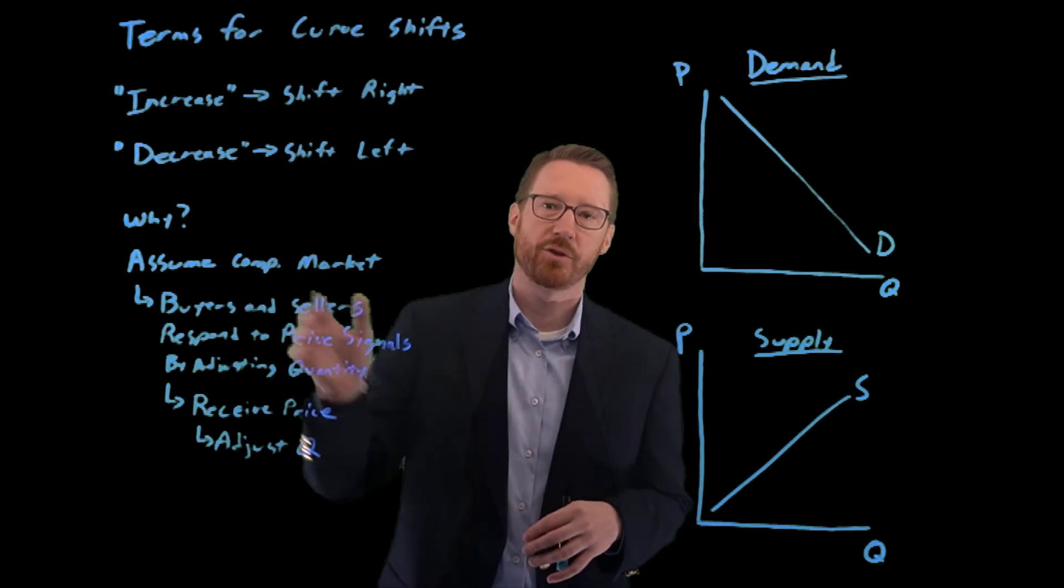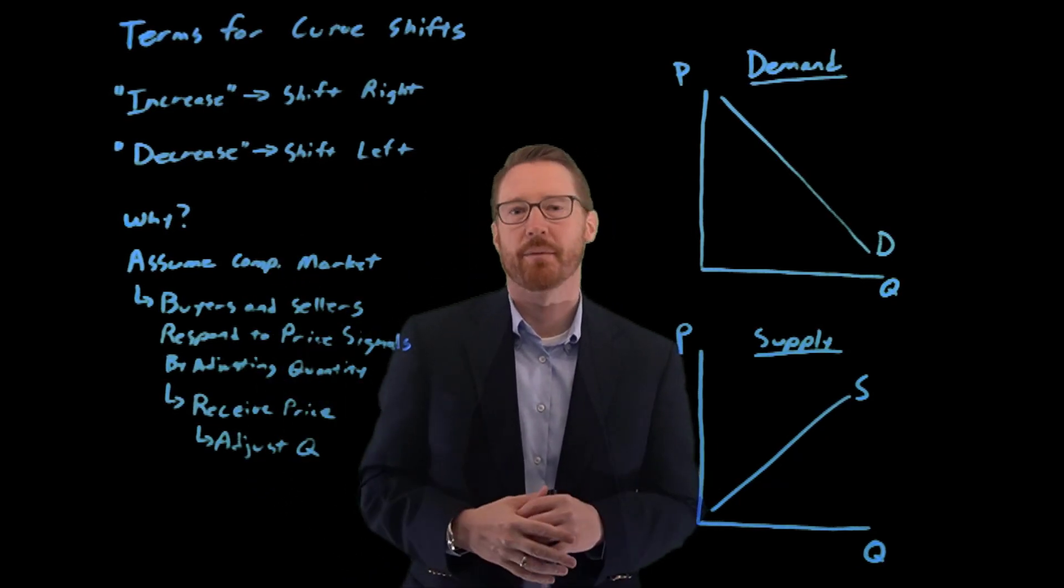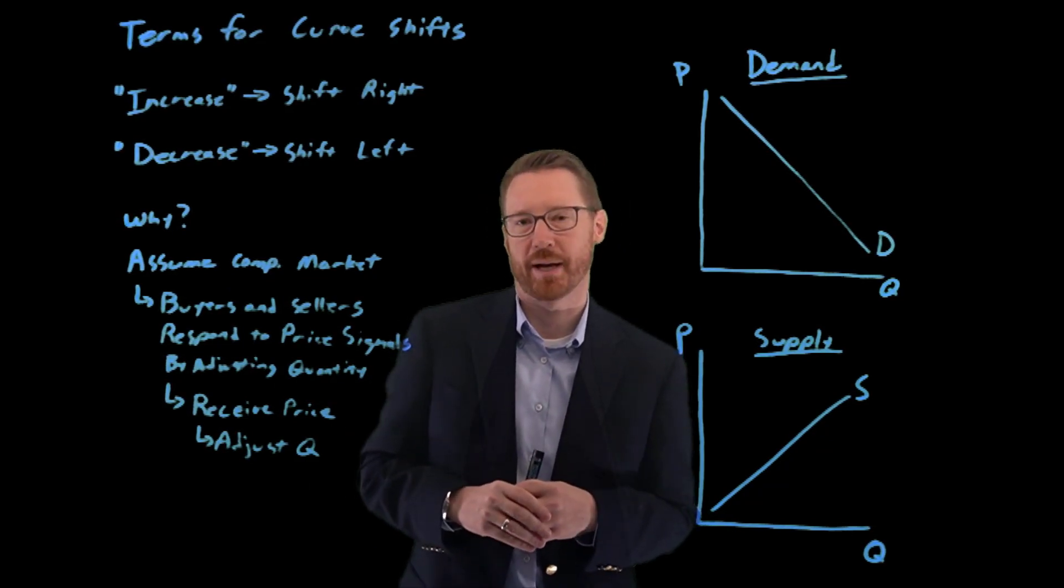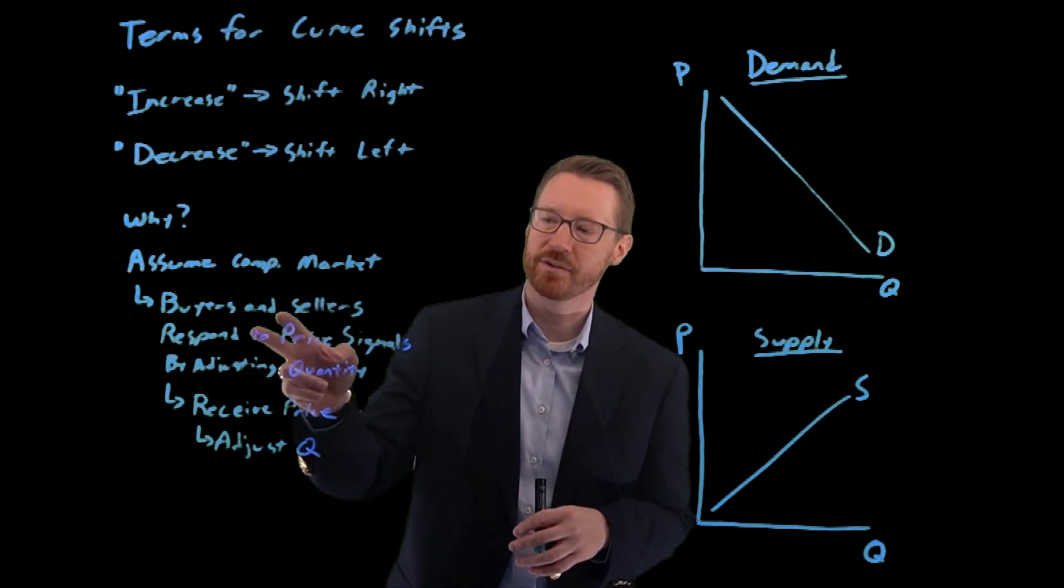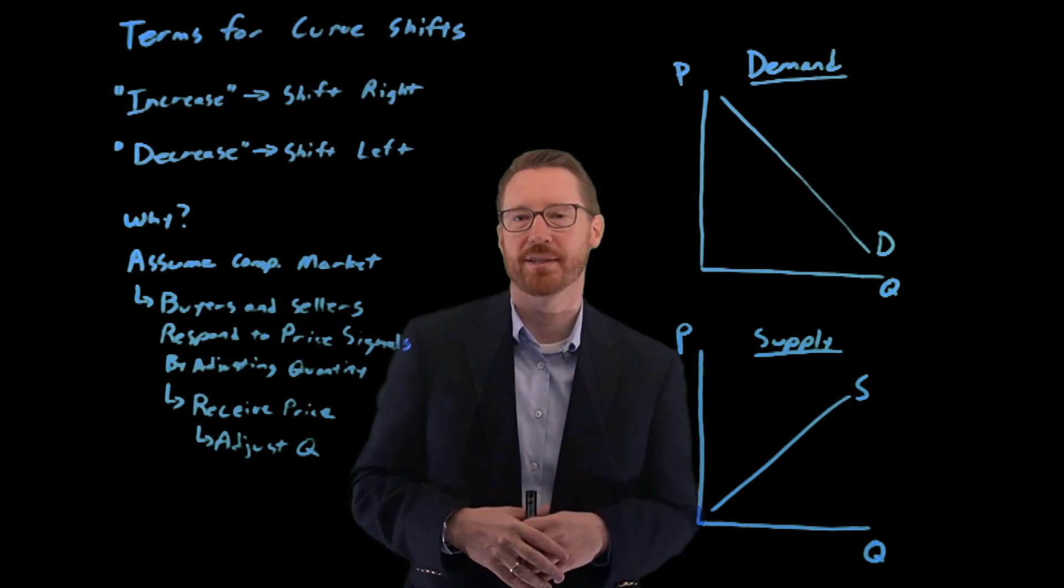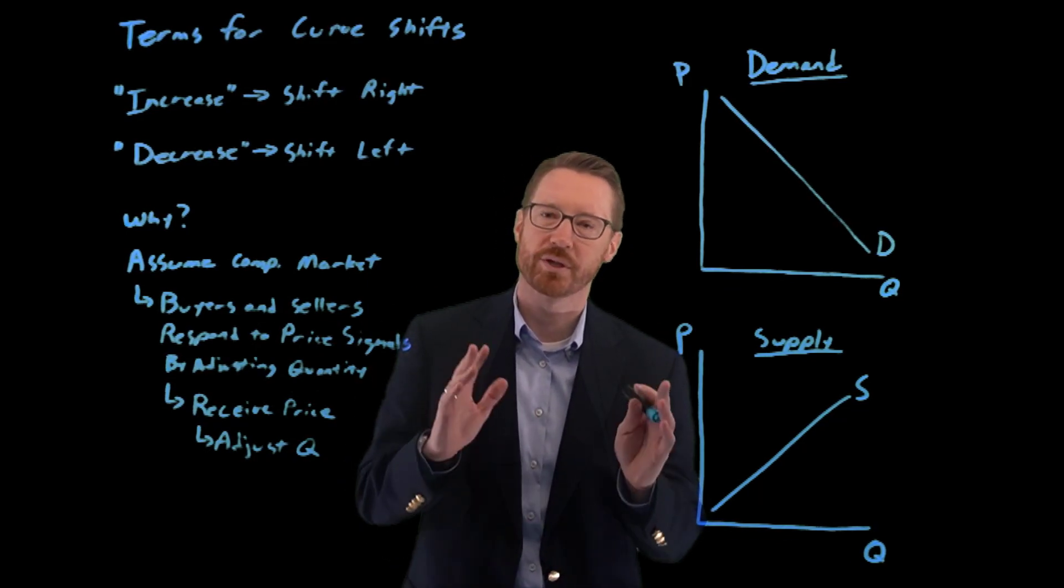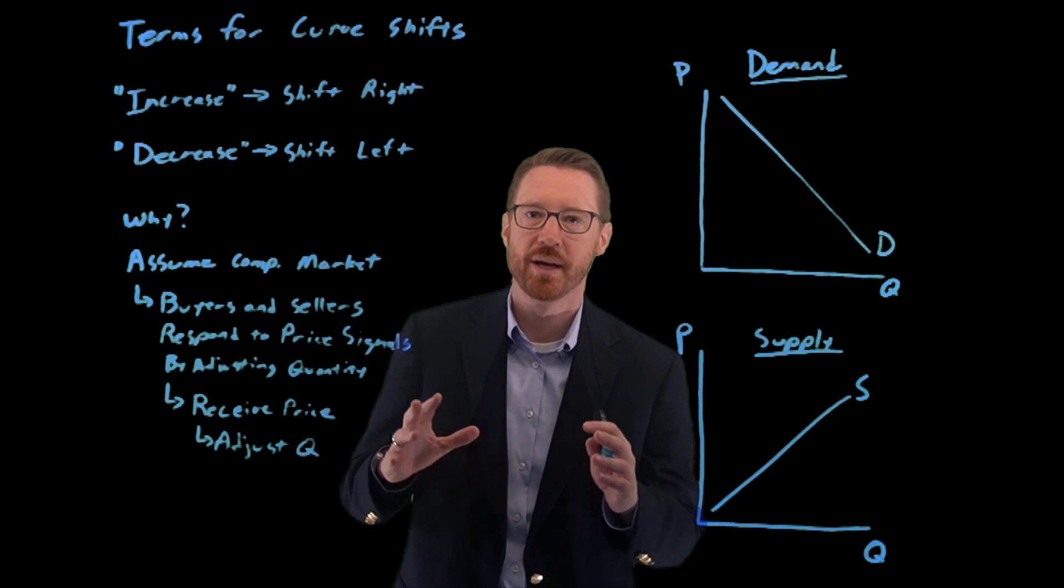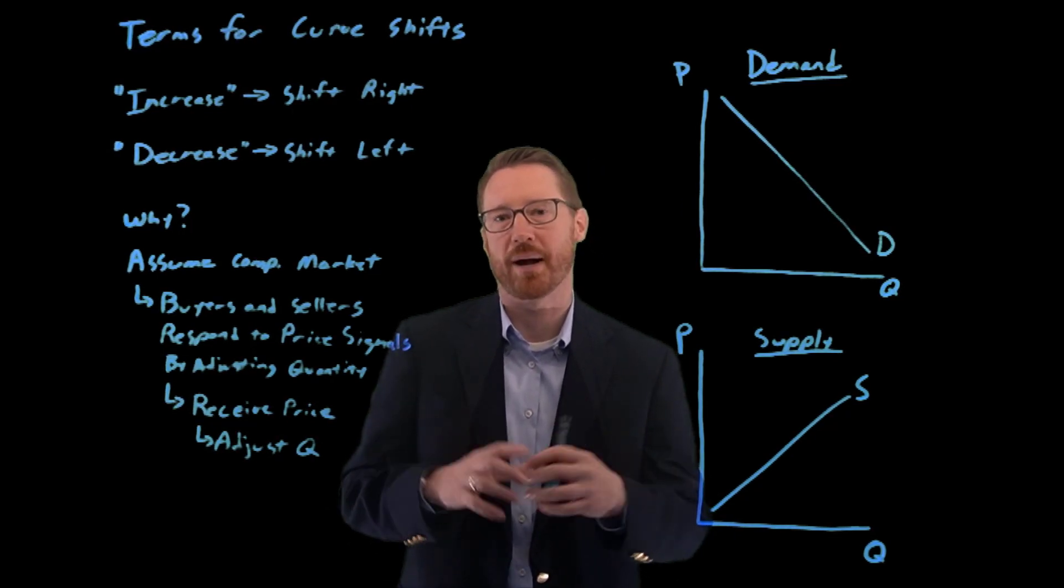Let's assume that we're in a relatively competitive market. If we're in a relatively competitive market, that means buyers and sellers are taking prices as given. They're responding to price signals and making decisions about quantity.